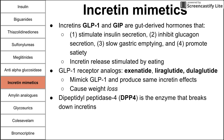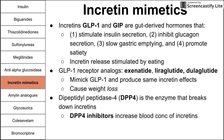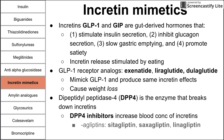There is also an enzyme called dipeptidyl peptidase-4, or DPP-4, which breaks down incretins. By inhibiting DPP-4, you keep your endogenous incretins active for longer, increasing their blood concentration. The drugs that do this are the gliptins — sitagliptin, saxagliptin, and linagliptin. These DPP-4 inhibitors block the breakdown of incretins and are administered orally.